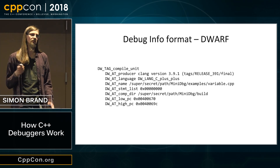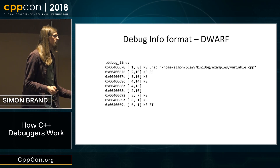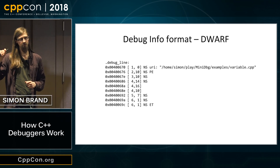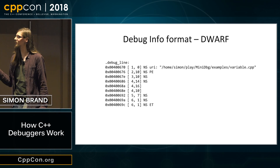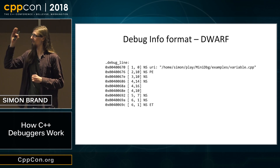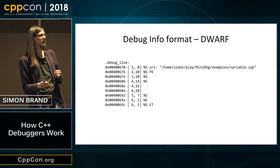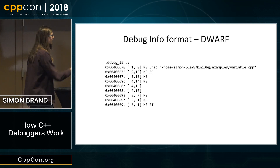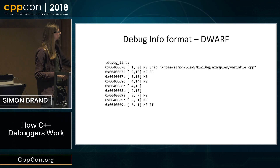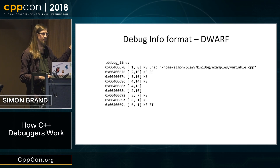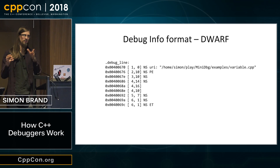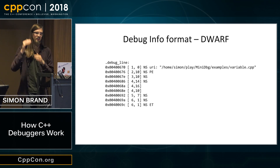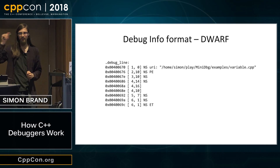As well as DIEs, there is line table information. This tells you which lines of your source code correspond to which machine code addresses. You have addresses on the left-hand side and rows and columns for your source code, and on the right-hand side there are descriptions in acronyms: NS is new statement, prolog end, end text. This is what the debugger looks at to understand how your source code relates to the machine code.